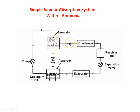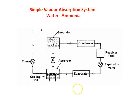The ammonia vapor goes to the condenser, is condensed, and converted into saturated liquid form of ammonia collected in the tank. It is then expanded in the expansion valve, the vapor absorbs heat in the evaporator, and the cycle repeats. So this is the vapor absorption refrigeration system, where the compressor is replaced by the absorber, generator, and pump.